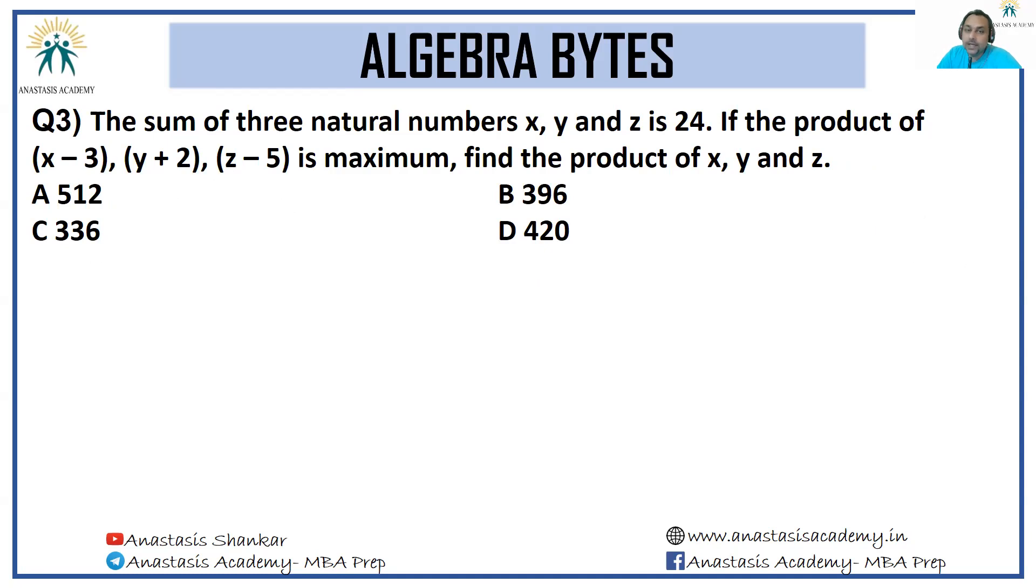Next, if the sum of 3 natural numbers x, y, z is 24, if the product of (x - 3), (y + 2), and (z - 5) is maximum, find the product of x, y, and z. Okay, look at this.